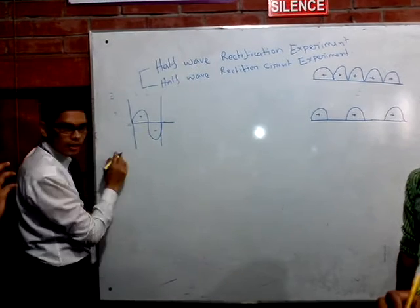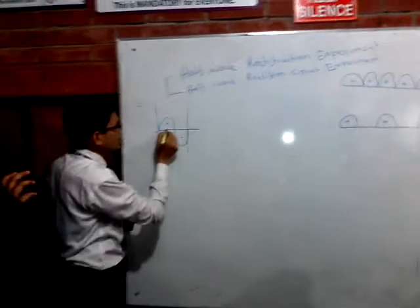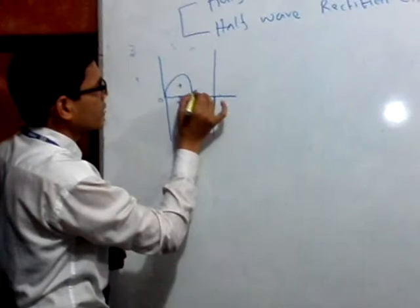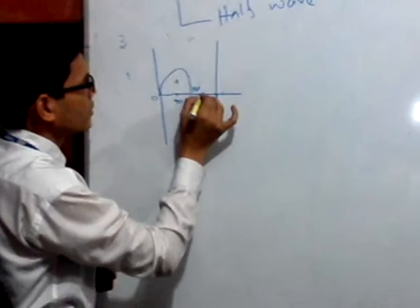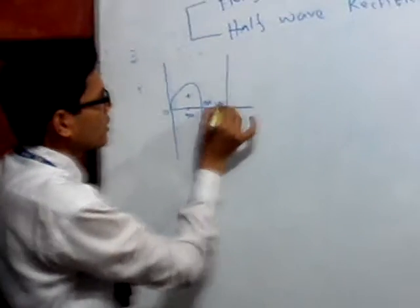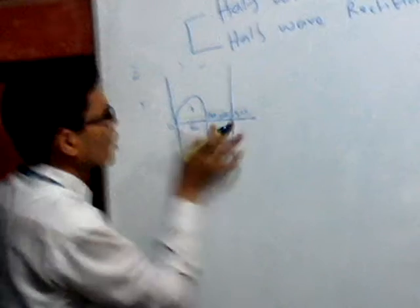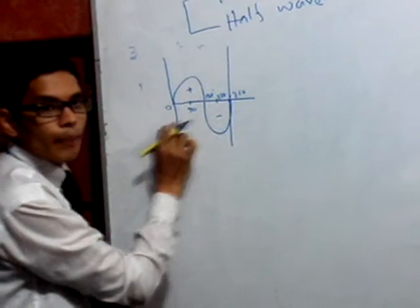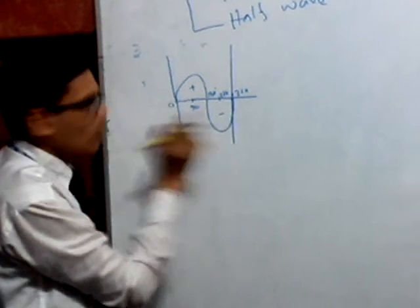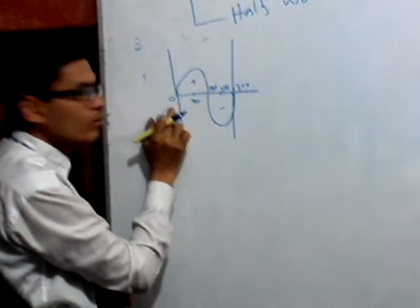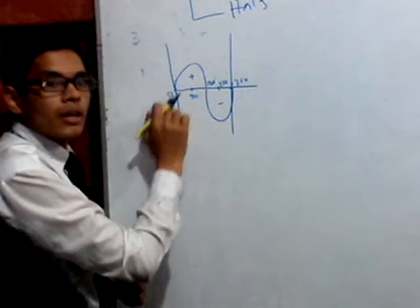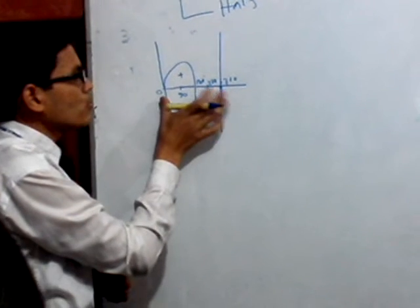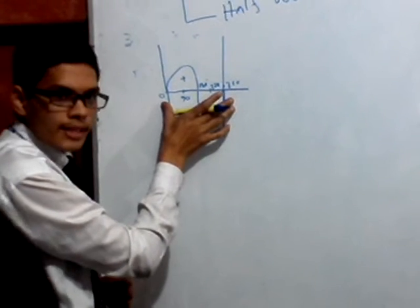Looking at the wave cycle: that is zero degrees, that is 90 degrees, and that is 180 degrees, and 270 degrees, and 360 degrees. So one full cycle completes up to 360 degrees. The angle of one full cycle is 360 degrees.